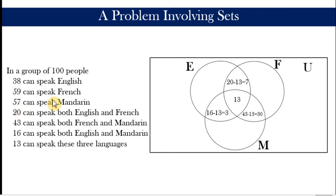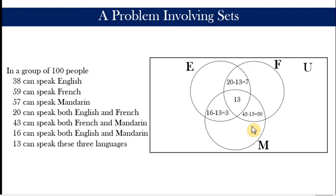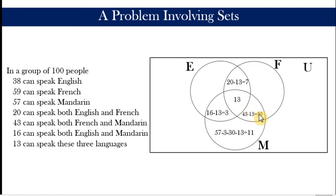Next, 57 can speak Mandarin, meaning the entire subset M should contain 57 people. We have already placed 30, 13, and 3 in that subset. So the Mandarin-only region should contain 57 minus 3 minus 13 minus 30, which equals 11.